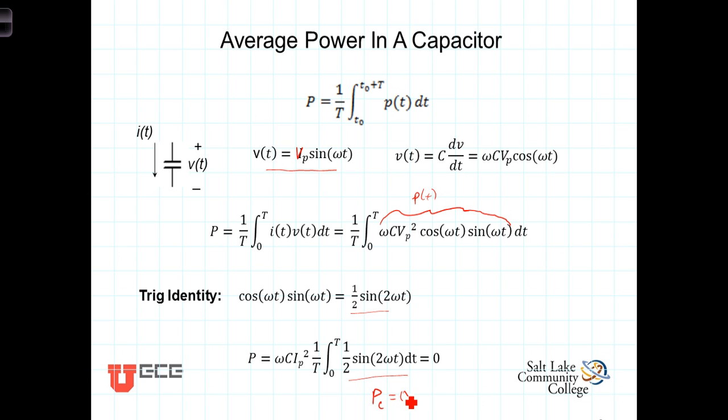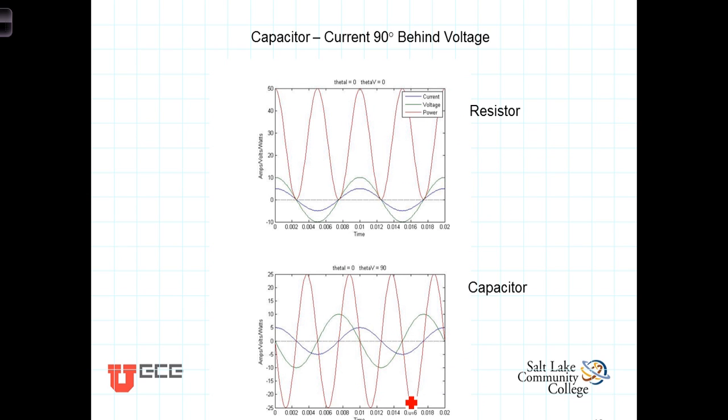Once again, how are we to understand that? In a capacitor, the voltage and current are 90 degrees out of phase with each other. When you multiply those two together, you end up with something analogous to what we had with the inductor. During this part of the cycle, the power is positive. When we integrate over that, we get additional energy being stored in the electric field of the capacitor.